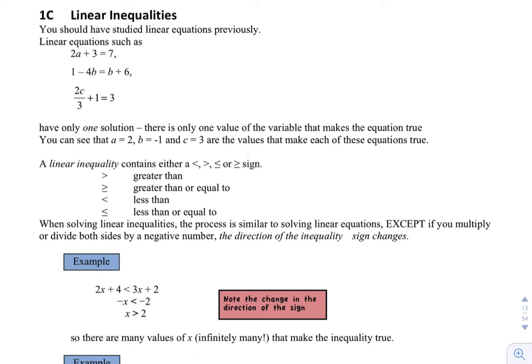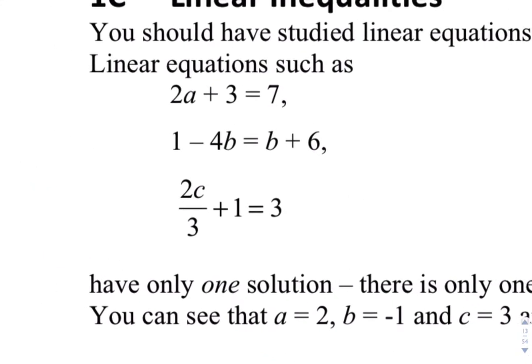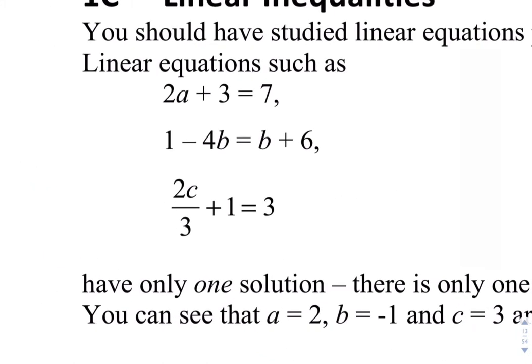So linear inequalities are a little bit different from linear equations that you have studied at school previously. Things like these ones here where we're trying to find the value of a variable that makes that equation true, and in each case there's only one value that makes those equations true. So in the first one a equals 2, b equals negative 1 works for the second one and 3 for c in the last one makes those equations true.